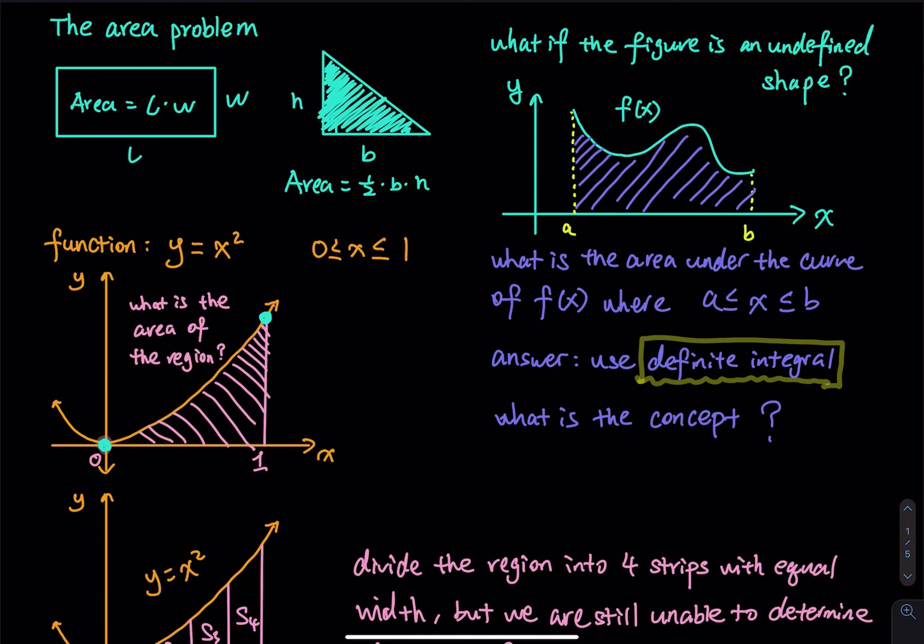Even if you cut that into little pieces, I still don't have such a formula, because the function is a curve — it's not a straight line, so it is not a hypotenuse. Therefore base times height divided by 2 is not going to work. Think about this: many years ago, with no computers, no phones, no internet — based only on a piece of paper, what can we do?